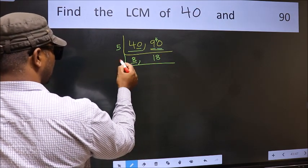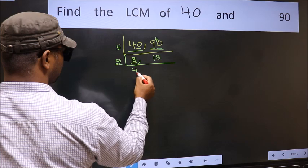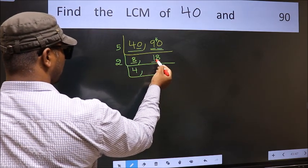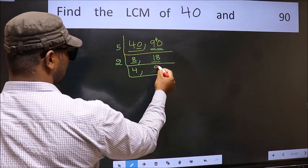Now here we have 8. 8 is 2 times 4 is 8. The other number 18, when do we get 18 in 2 table? 2 times 9 is 18.